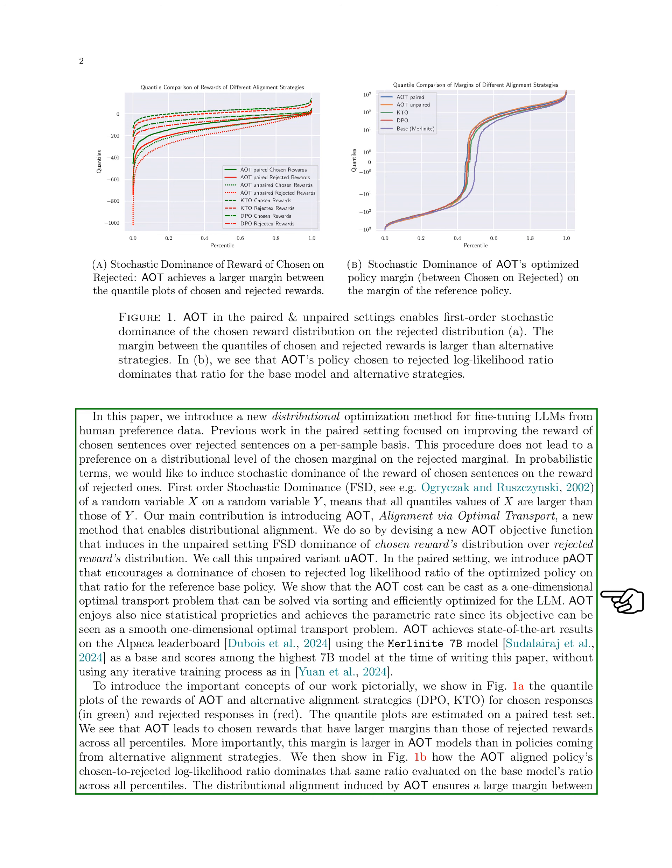AOT aims to align the distribution of rewards in both paired and unpaired settings. It achieves this by optimizing a one-dimensional optimal transport problem efficiently. AOT has shown promising results on the Alpaca leaderboard, outperforming other alignment strategies like DPO and KTO. By visually comparing quantile plots, we demonstrate that AOT leads to larger margins between chosen and rejected rewards across all percentiles, reflecting preferences not just on average but also distributionally.